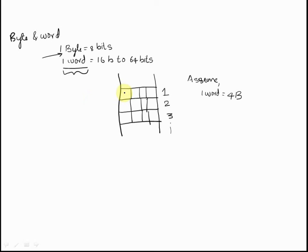In order to address each byte, each byte also has an address in a byte addressable system. So the address of the first byte is 1, next is 2, 3, 4, 5, 6, 7, 8, 9, 10, 11, 12.